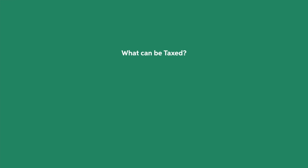Taxes can be imposed on multiple assets. The most common type of tax is an income tax, which is a tax on individual earnings. However, many other things can be taxed as well. There are property taxes, like the taxes paid on houses.